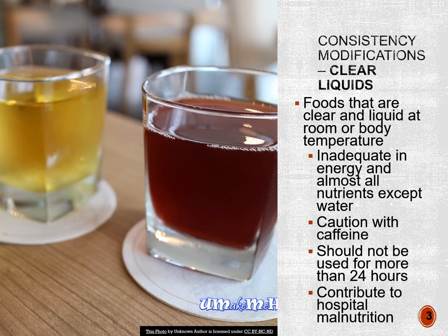Let's begin with diet modifications for liquid diets. Clear liquid diets, as the name implies, are foods that are clear and liquid at room temperature. You can see through them. They are not going to give your patients their full nutrition requirements in terms of calories and protein. Caffeine and caffeinated beverages are not allowed. Examples include apple juice, grape juice, cranberry juice, clear broth, and decaffeinated tea and coffee. Clear liquid diets unfortunately contribute to hospital malnutrition. The diet prescription should not be written by the doctor for more than 24 hours.